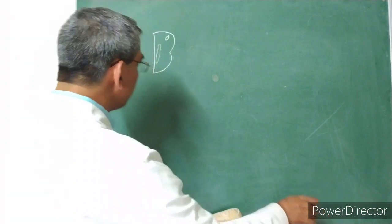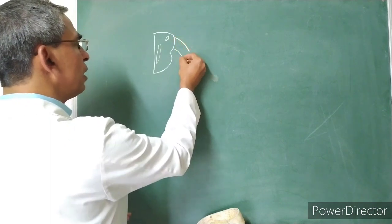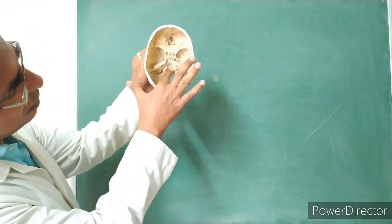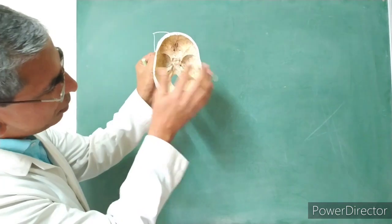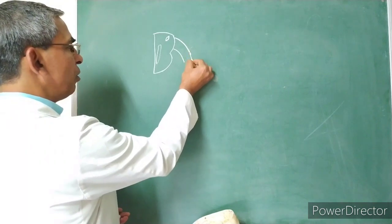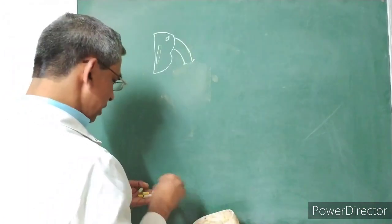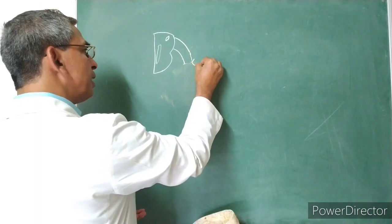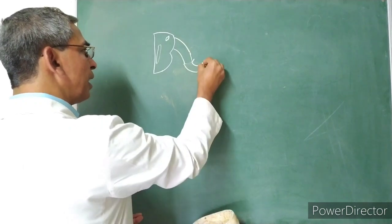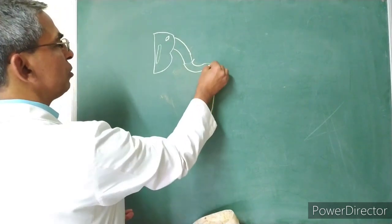The facial nerve, after arising from the pons, enters into the internal acoustic meatus. It then turns and enters into the facial canal — this bend is known as the genu of the facial nerve, or the external genu.